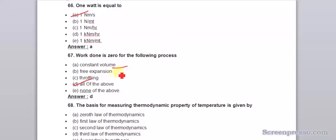Work done is zero for the following processes: constant volume, free expansion, and throttling. These all processes have zero work done.